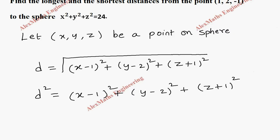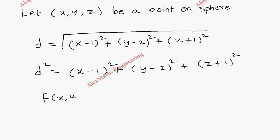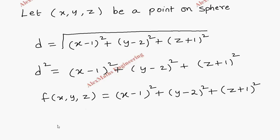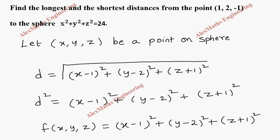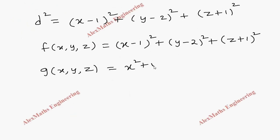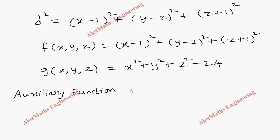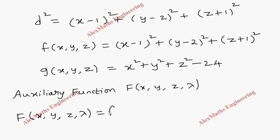So d² = (x−1)² + (y−2)² + (z+1)². This is our function f(x, y, z). And g(x, y, z) is our sphere equation, which acts as a condition: x² + y² + z² − 24 = 0. We have to write the auxiliary function F(x, y, z, λ) = f(x, y, z) + λ·g(x, y, z).